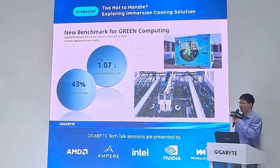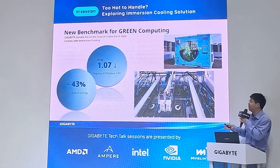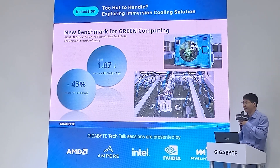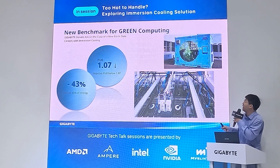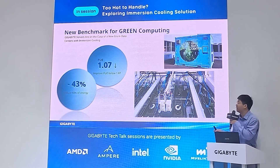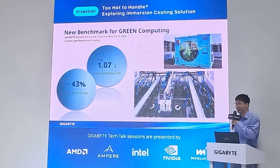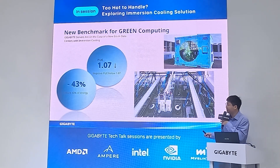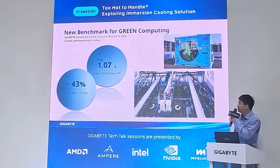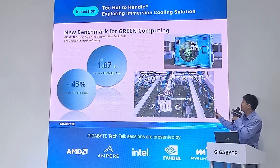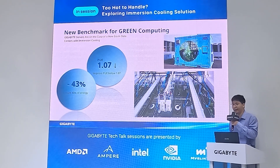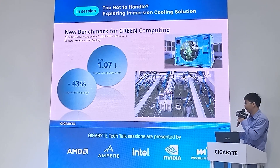Here is an example of one-phase immersion cooling in action. GIGABYTE worked with a Japanese telco giant using a container-type immersion tank, which is mobile and eco-friendly. It helped the data center reduce power consumption by 43%, lowering PUE to 1.07. This kind of design may set a new trend for high-performance and green computing.